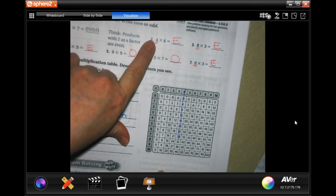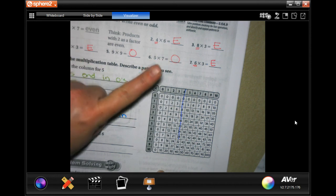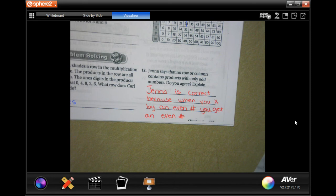Doesn't matter if it's both numbers, all you need is one even number and the answer is going to be even. So Jenna's correct because when you multiply by an even number you're going to get an even number.